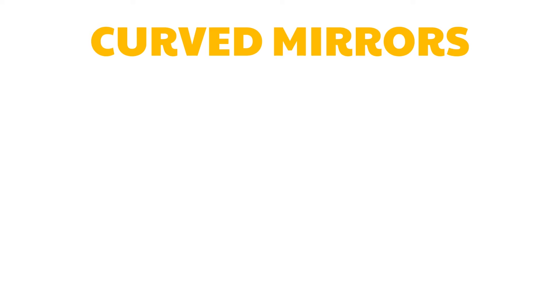Curved mirrors have different applications from plane mirrors. One of the most important safety devices on your vehicle is its set of mirrors. It might be considered the simplest, but it plays a great role in ensuring your safety on the road. A side mirror, also known as the wing mirror, is a mirror placed on both sides of motor vehicles to help the driver see areas behind and to the sides of the vehicle, outside the driver's peripheral view, known as the blind spot.